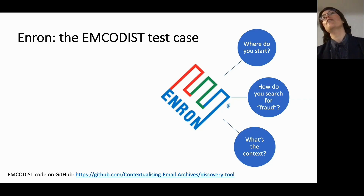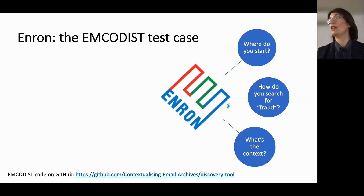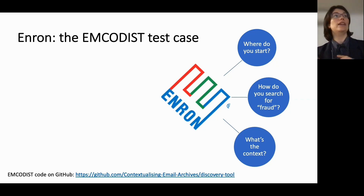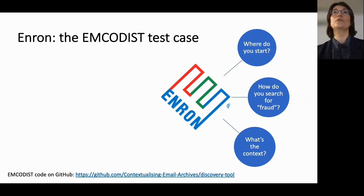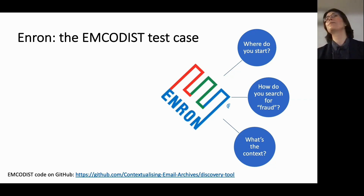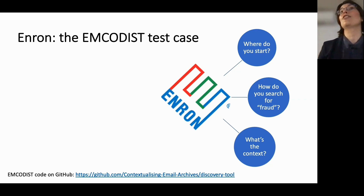Enron is an interesting archive because people know Enron for the big accountancy fraud, so they assume the emails will speak to that fraud. They do to an extent, but actually the emails are in the public domain due to a scandal in California around energy trading and were made available in connection with that particular lawsuit. As a result, what you actually find in that email database is a lot of material relating to energy trading in California, which is not what people expect. So the collection is slightly different in structure from what people would expect — there's context around why this collection exists, and it helps to understand that if you're looking for material, because it tells you why you can't find certain things but might find a lot of other things.